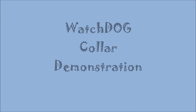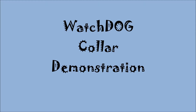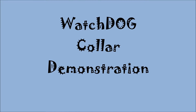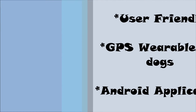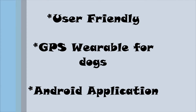Welcome to the demonstration for the Watchdog Smart Collar project. Watchdog is a wearable GPS device for dogs that allows users to find their pet in the event that they get lost, as well as set up virtual invisible fences. The device is controlled entirely by an Android application. The features we will look at today are Find My Dog, as well as the Geofence.